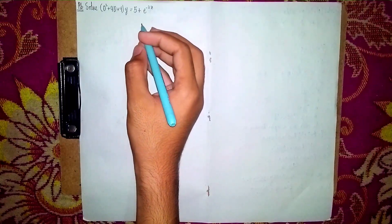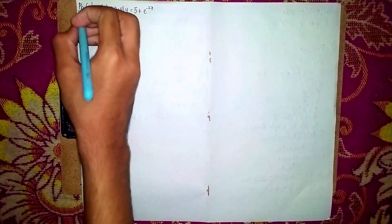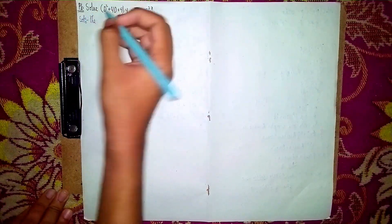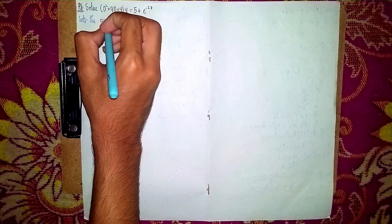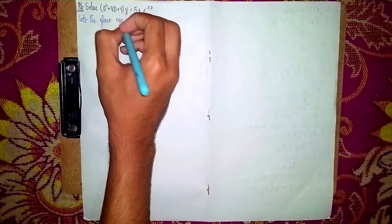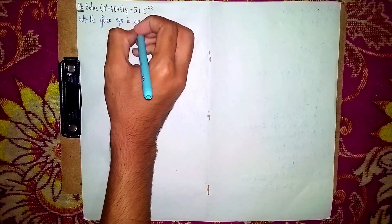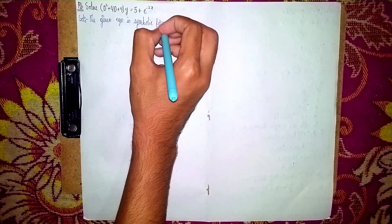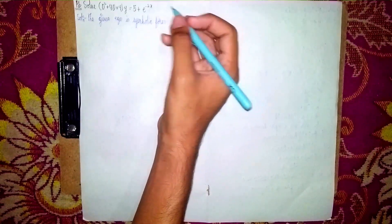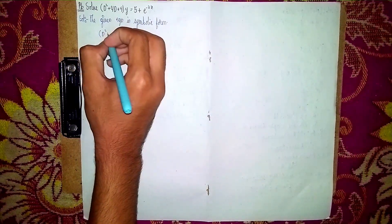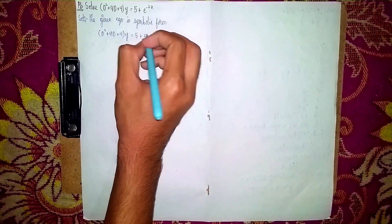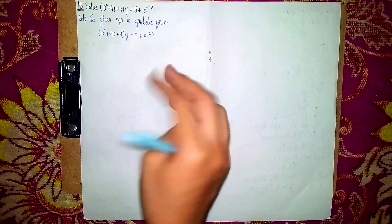Hello students, welcome back to my channel. Today we discuss: (D² + 4D + 4)y = 5 + e^(−2x). It is a non-homogeneous linear differential equation. Write the given equation first in symbolic form. So: (D² + 4D + 4)y = 5 + e^(−2x). We have three steps to solve this question.